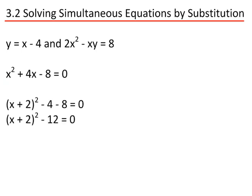So now, x plus 2 all squared minus 12 equals 0, with minus 4 minus 8 equalling minus 12. Rearranging, x plus 2 all squared equals 12.